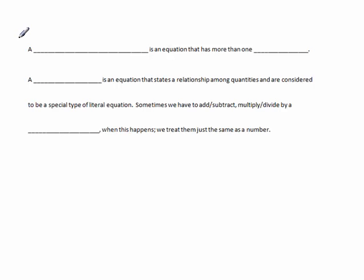We should have the chapter notes for chapter 2.5, and again the vocabulary is up to you but you should catch that in the video. A literal equation is an equation that has more than one variable. A formula is an equation that states a relationship among quantities and are considered to be a special type of literal equation.